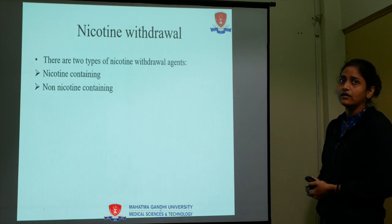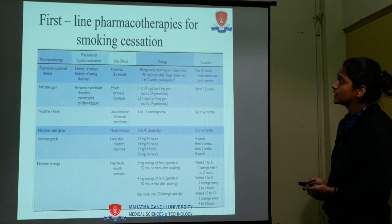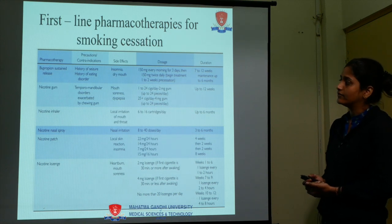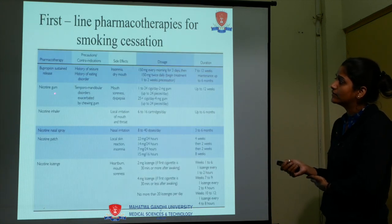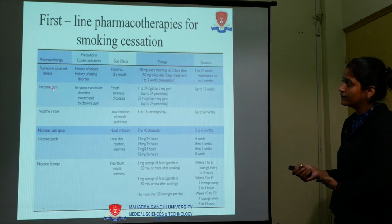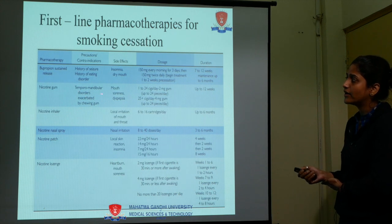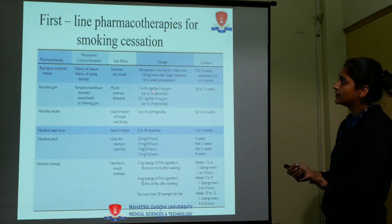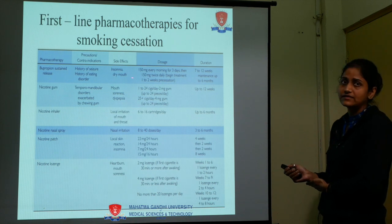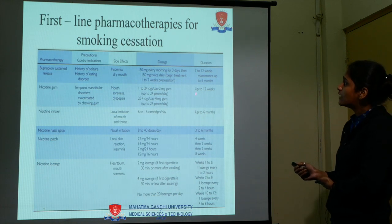There are two types of nicotine withdrawal agents: nicotine-containing and non-nicotine-containing. For nicotine-containing first-line pharmacotherapy, nicotine gum is one option. Precautions and contraindications include temporomandibular disorder, as chewing is exacerbated. Side effects include mouth soreness and dysphagia. Doses are 2 mg gum up to 24 pieces per day for 1–24 cigarettes per day, and 4 mg gum up to 24 pieces per day for 25 or more cigarettes per day, with duration up to 12 weeks.